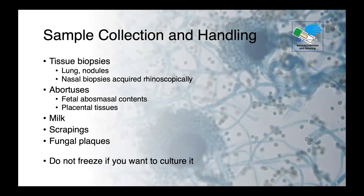For sample collection, depending on what stage your patient is at, if they're still alive we can collect tissue biopsies — perhaps lungs or nodules from the lungs in cases of birds, nasal biopsies, or samples of fungal mats collected rhinoscopically. If we have an abortion, fetal abomasal contents and placental tissues can be very useful. Milk in cases of mastitis, scrapings, and fungal plaques. Do not freeze the sample if you want to culture it.